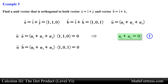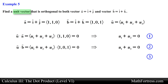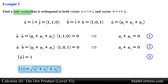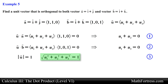So u dot a simplifies to u sub 1 plus u sub 2 equals 0, and u dot b simplifies to u sub 1 plus u sub 3 equals 0. We want to solve for u sub 1, u sub 2, and u sub 3, but we have 3 unknowns and only 2 equations. Recall that vector u is a unit vector, so its magnitude equals 1. Using the magnitude formula and setting it equal to 1, then squaring both sides, we obtain a third equation.